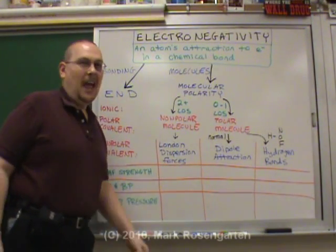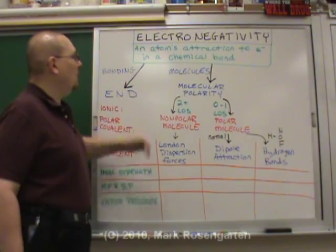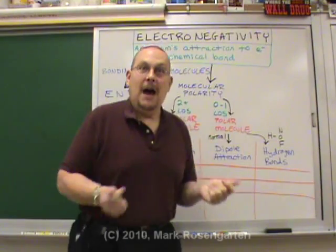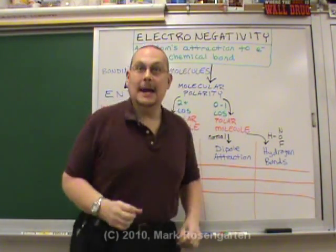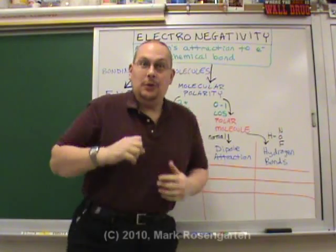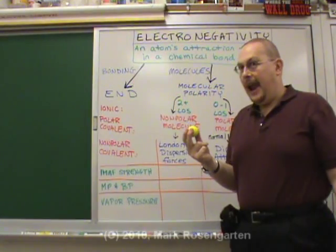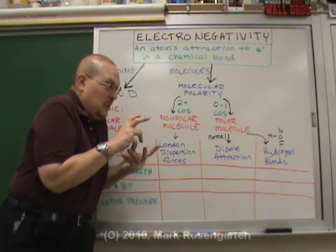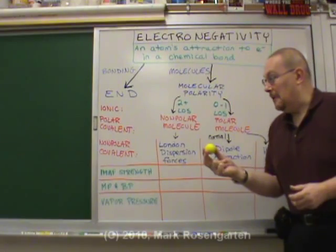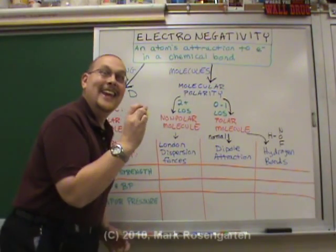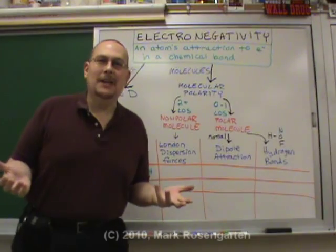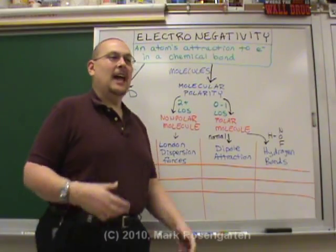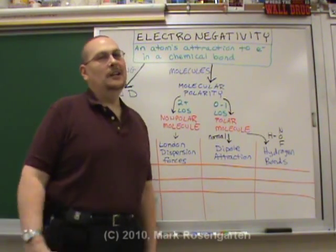Electronegativity is simply this: an atom's attraction to electrons in a chemical bond. The atom that has greater electronegativity is going to attract the electrons, and the atom that has less electronegativity is the one that's going to lose them.